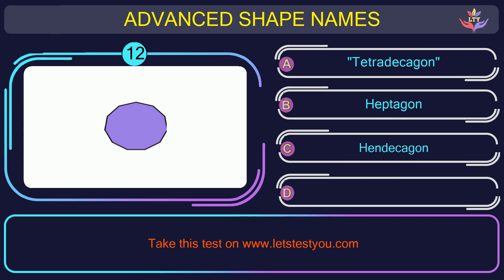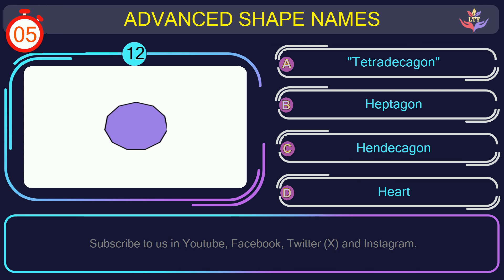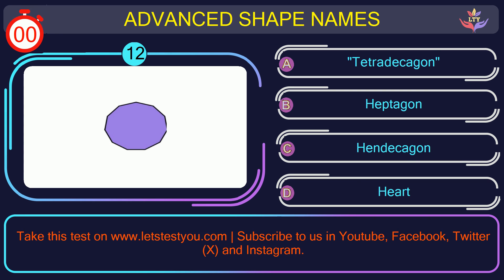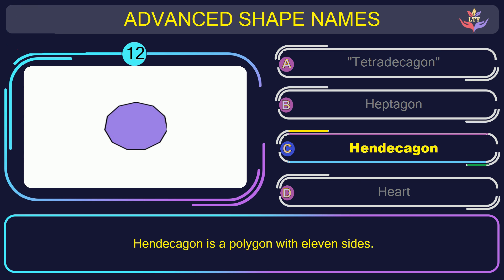Question number twelve. Can you name the shape you see in this picture? The correct answer is option C. Hendecagon. Hendecagon is a polygon with eleven sides.